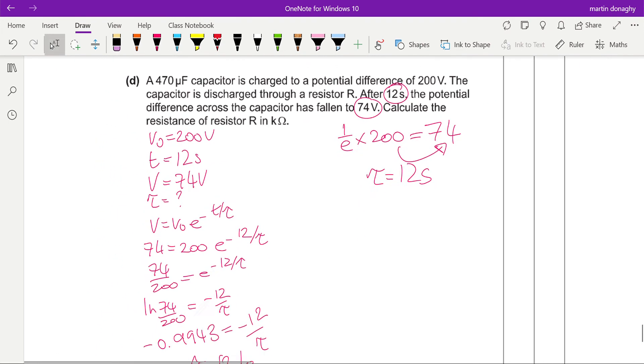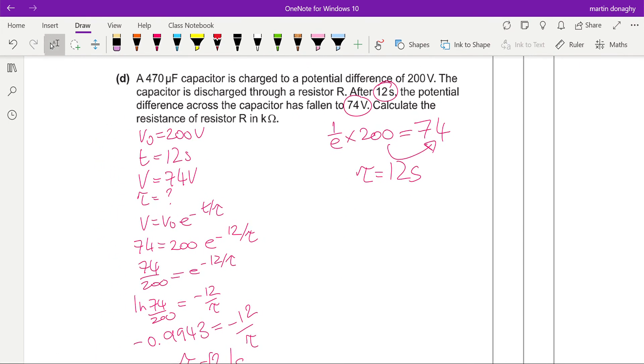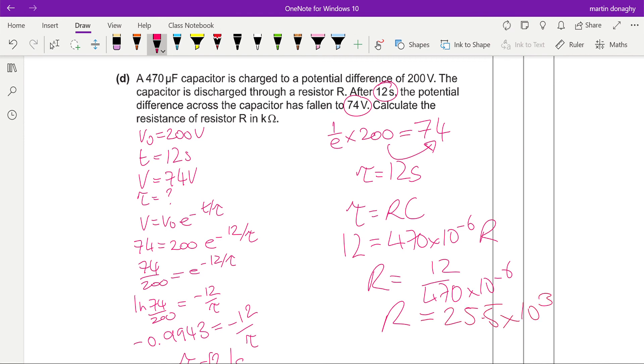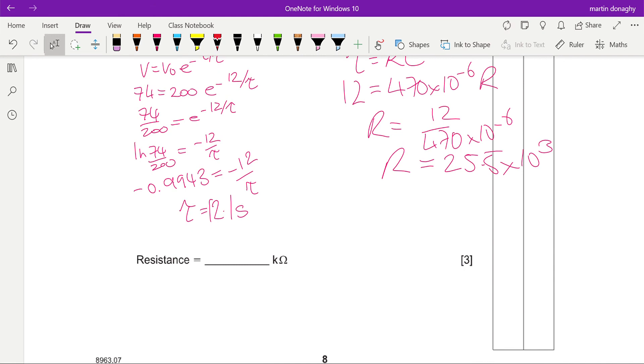What we can then do is take that value and put it into our equation for the time constant. We'll just take the 12 equals 470 by 10 to the minus 6 times R. R equals 12 divided by 470 by 10 to the minus 6, which gives you a resistance of 25.5 by 10 to the 3. Now it wants it in kilohms, so you have to be very careful that you remove that by 10 to the 3 in there.